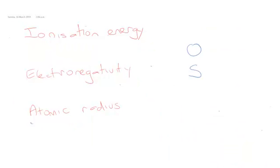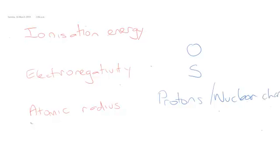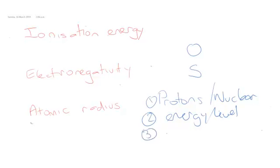If we compare oxygen and sulfur, the first thing we'd notice is that oxygen is in a lower energy level — sulfur is one energy level down. So we look at the same four things: protons or nuclear charge, energy level, electron shielding, and electrostatic attraction. The number of protons going from oxygen to sulfur is increasing, and the energy level — it's actually further out. The energy level has gone up; sulfur is in a higher energy level. And the electron shielding must have increased as well.